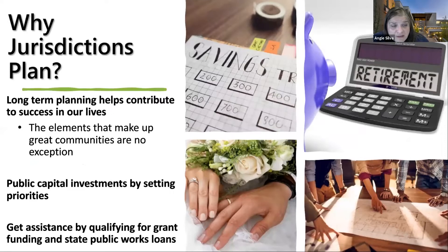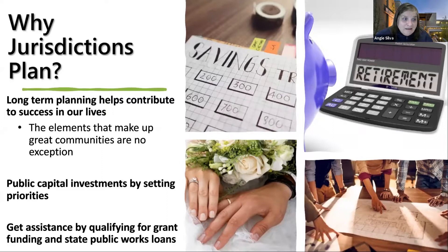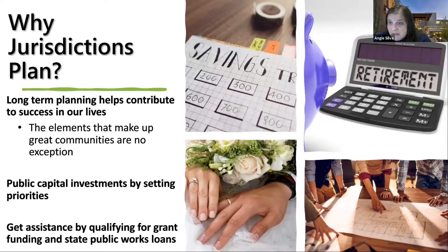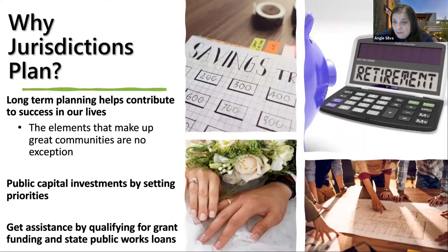One of the things we get questions about at the Department of Community Development is why do jurisdictions plan? Even in our own personal finances or retirement, long-term planning helps contribute to success in our lives. These elements help make great communities. Part of the Washington State Growth Management Act is also planning for capital investments over a six-year and a 20-year period. By setting forth those sideboards on needed infrastructure and the growth we need to accommodate, this sets up a financing structure to seek additional grants and loans to help build public investments that lead into private investments in our communities.